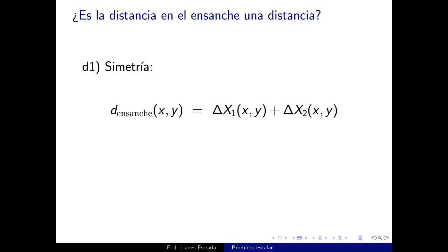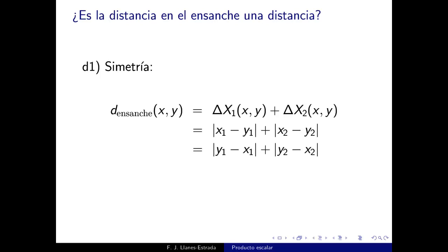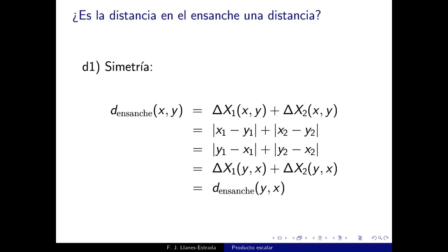Primero, la simetría. La distancia en el ensanche entre X e Y es |X₁−Y₁| + |X₂−Y₂|. El módulo de una diferencia no atiende al signo interior, así que |X₁−Y₁| = |Y₁−X₁| y lo mismo para la otra coordenada. Al sumarlos obtenemos la distancia de Y a X, es decir, la misma distancia con los argumentos cambiados. Por tanto, es simétrica.